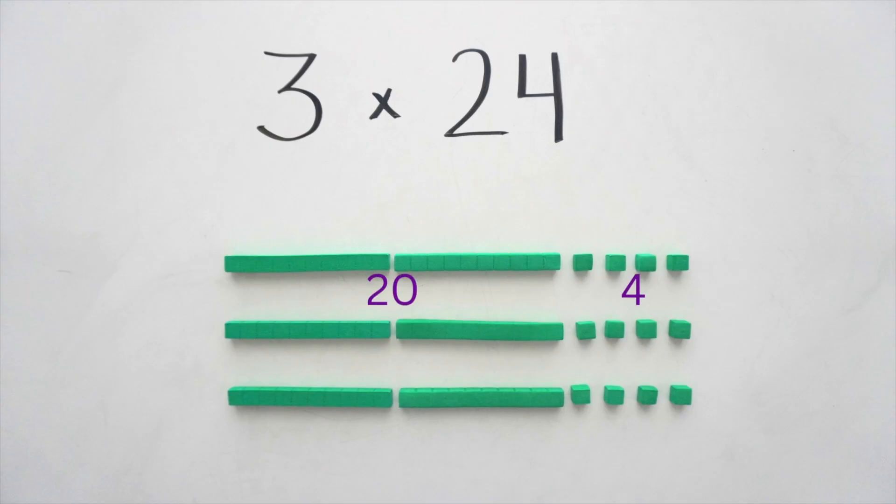which shows how multiplication connects directly to area. Arrays like this help students see the total more quickly since they can count by rows or columns instead of one at a time.